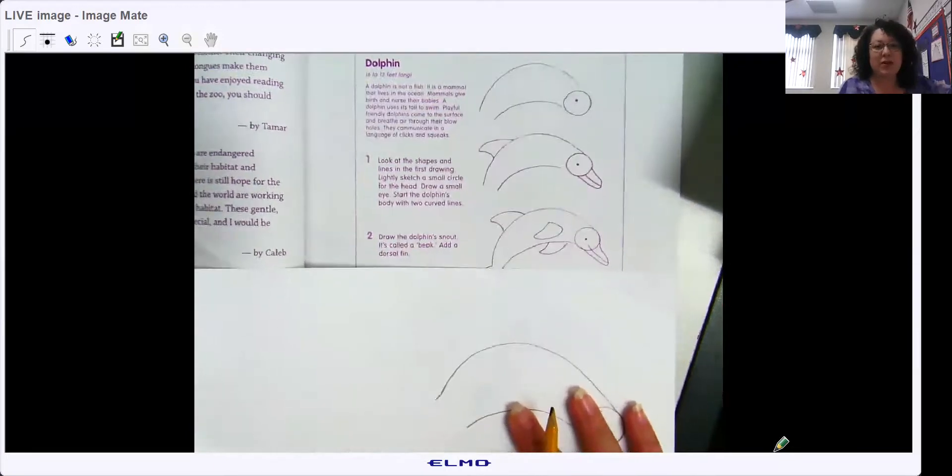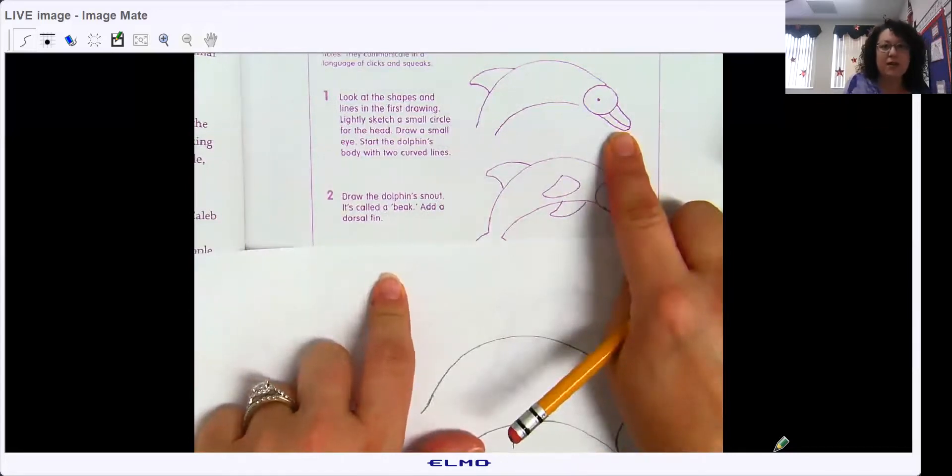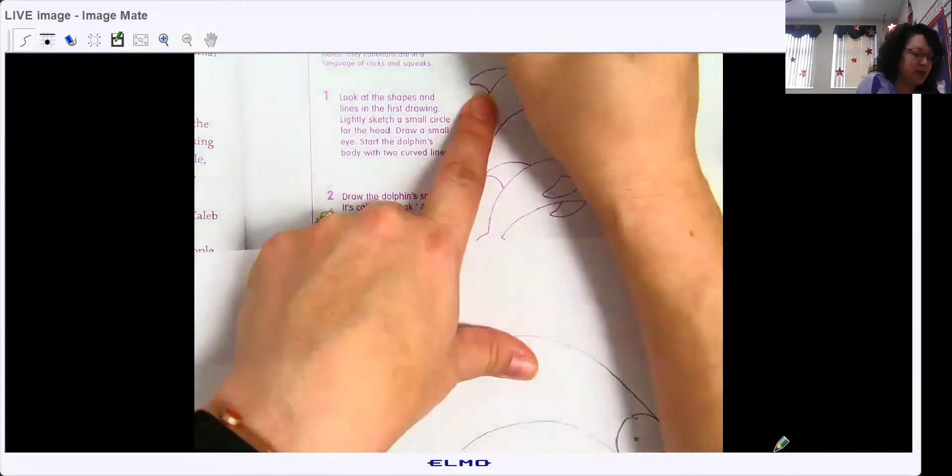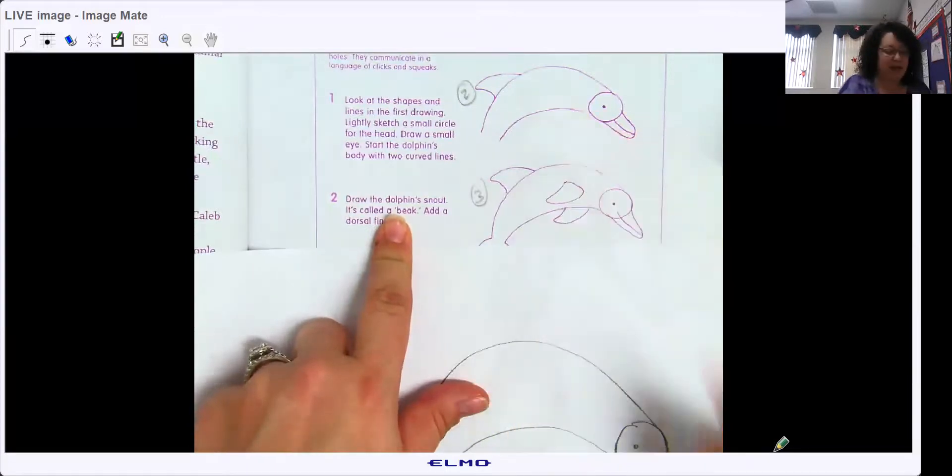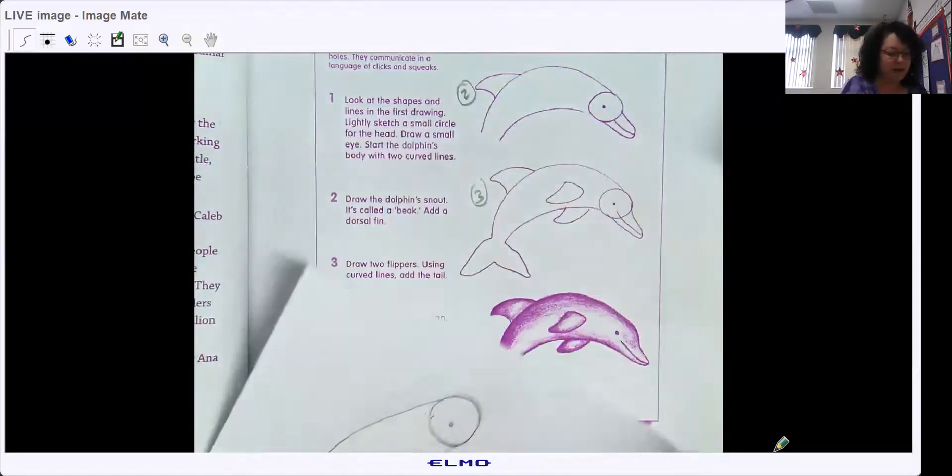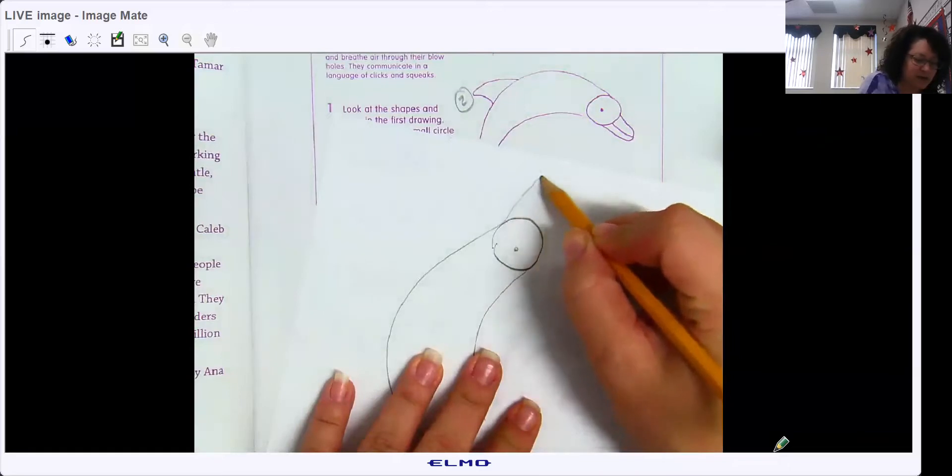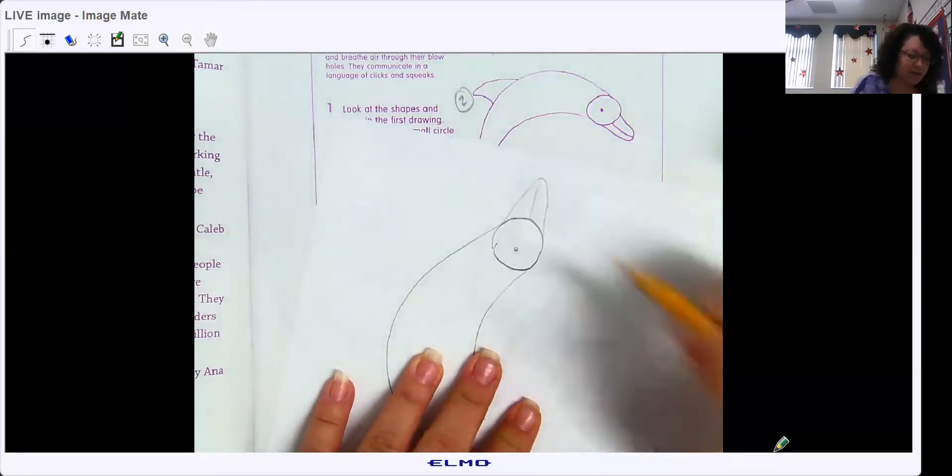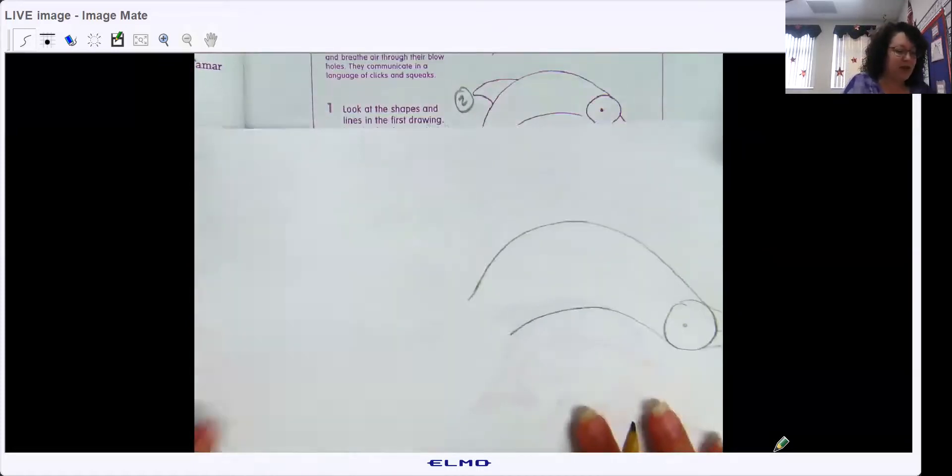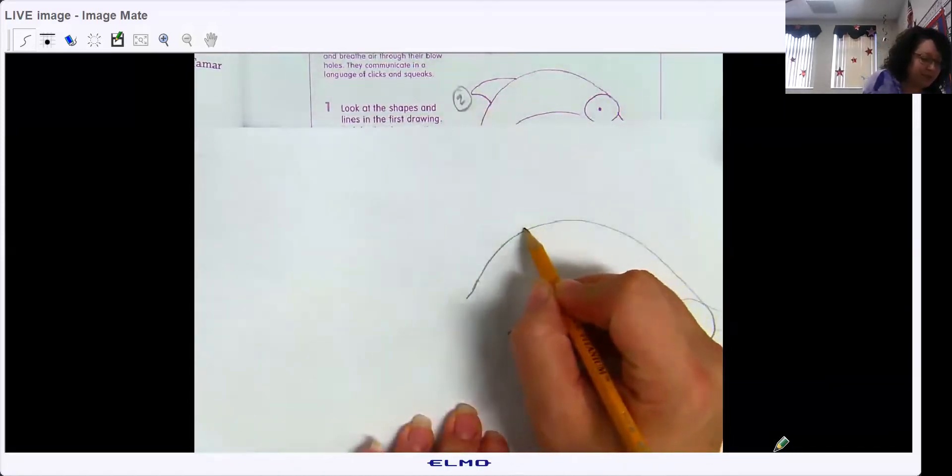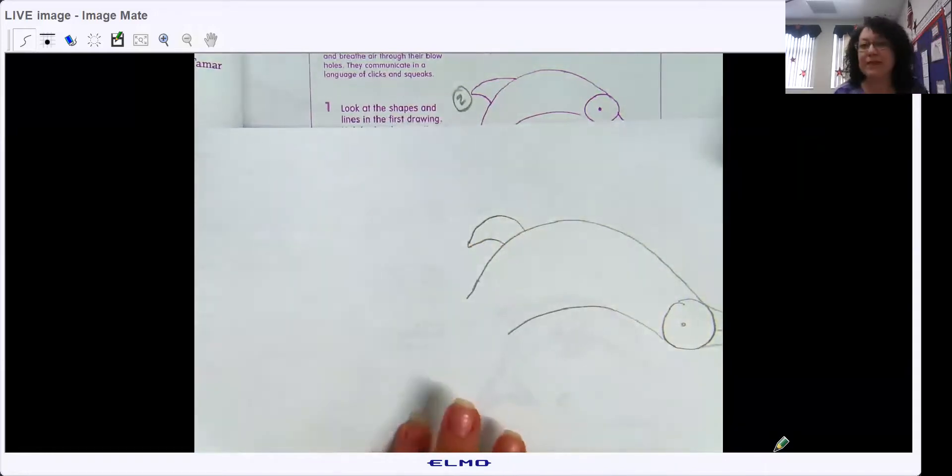Step two. Draw the line, draw the dolphin snout. It's called a beak. Add a dorsal fin. This is picture one, picture two, picture three. So we're matching the steps. So we need the snout and the fin. So I'm gonna take mine and turn it this way to draw the snout. It looks like a bird. Maybe that's why it's called a beak. And the dorsal fin. This is not my best artistic work. I can tell you that right now.